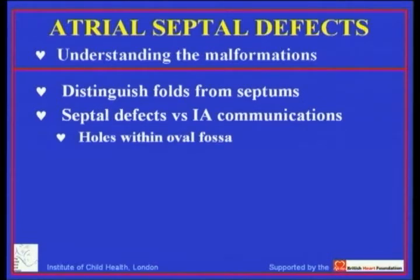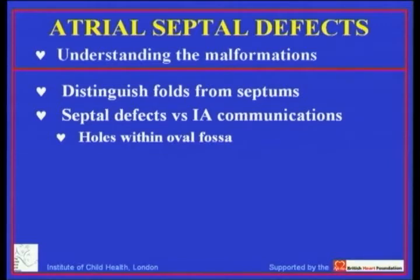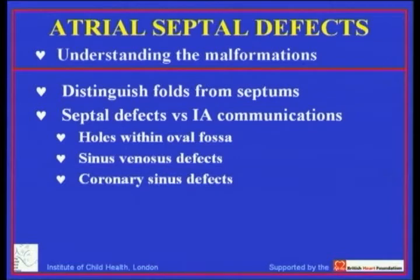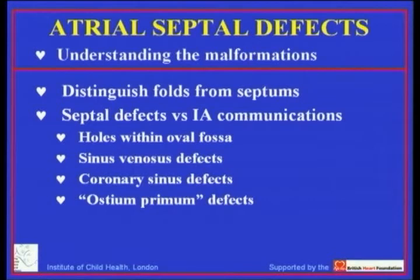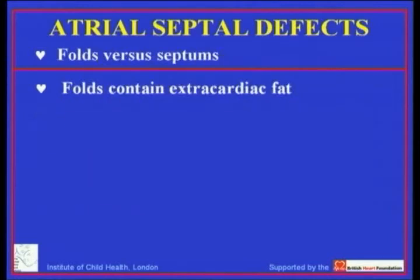It is the difference between holes that exist within the oval fossa — and those who worry about the Englishing of these terms argue that we should be talking about the oval pit, and indeed there's a degree of truth in that, but we have incorporated 'fossa' in its own form into the English language. But when we look at other defects — the so-called sinus venosus defect, the coronary sinus defect, and the ostium primum defect which we will relegate to our next session — what we're going to show you is that all of these holes are outside the confines of the normal septal structures.